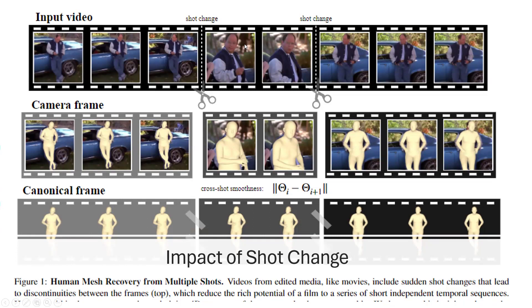The problem with traditional datasets is that they will consider each individual shot as a separate unit and reconstruct meshes only for those scenes. When you have less information — like a scene where the full body is not visible — you don't have the information of the full body compared to scenes where you do. So when you have such a partial view of the image and reconstruct the meshes, it doesn't have all the information.